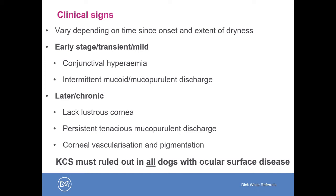With chronic corneal drying we'll see chronic corneal side effects such as corneal vascularization, pigmentation, and fibrosis, which leads to significant visual deficits if severe. There are numerous possible ocular surface signs, so it's really important that dry eye is ruled out in all dogs with ocular surface disease — a bare minimum Schirmer tear test should be performed in all dogs with evidence of ocular surface disease if it's safe to do so.